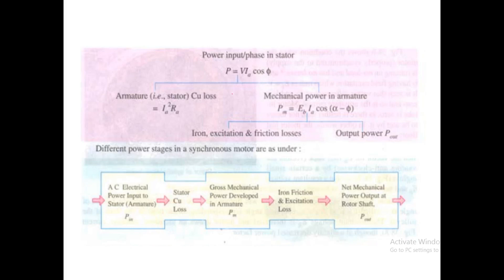This table will also be very familiar: power input equals copper losses plus mechanical power. Copper losses are Ia squared Ri — we are taking just a single phase here. Per phase power only. P equal to V into Ia cos phi contains two parts: one is armature or stator copper losses, which is Ia squared Ri, and mechanical power can be written as Eb into Ia cos(phi minus phi).